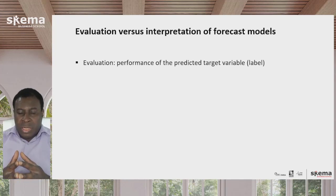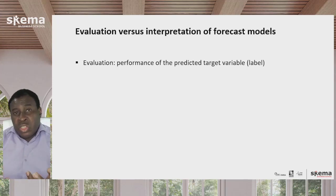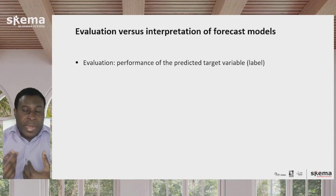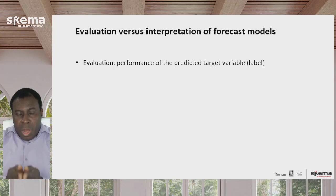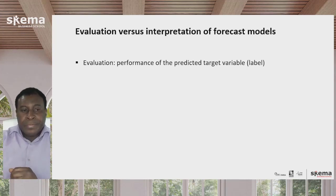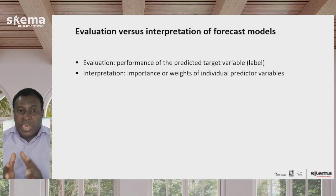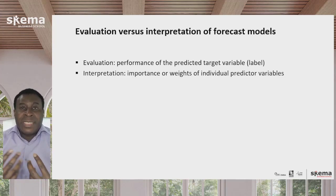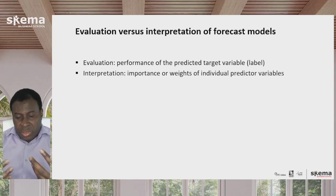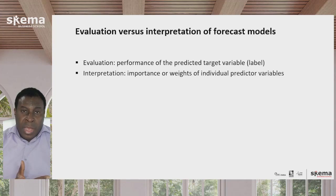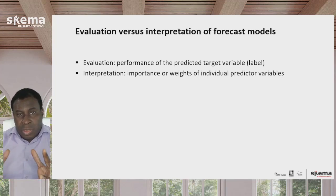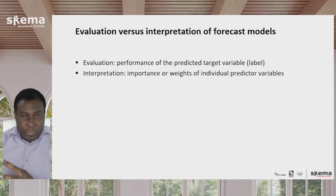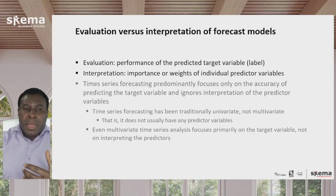What I mean by evaluation is focusing on the performance of the predictive target variable — that's the label, whatever it is you're trying to forecast. For instance, if you're forecasting sales, then how well did the model forecast the sales numbers? Interpretation, on the other hand, has to do with the importance or the weights of the individual predictor variables. So if in your time series forecasting you also include amounts of advertising, maybe the weather and so on, and want to see what effects those have on the forecast — that's what I would call interpretation, as distinct from evaluation of the forecast model.